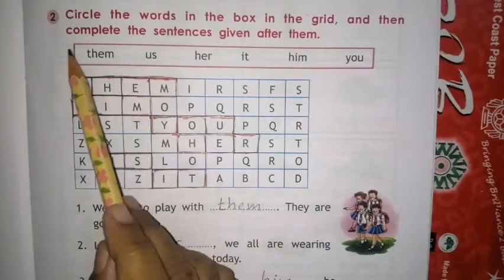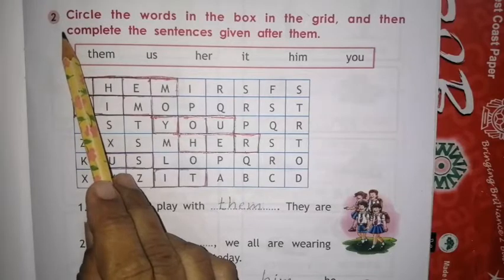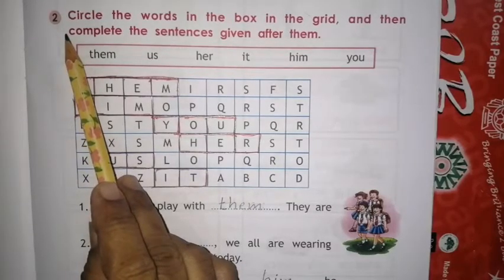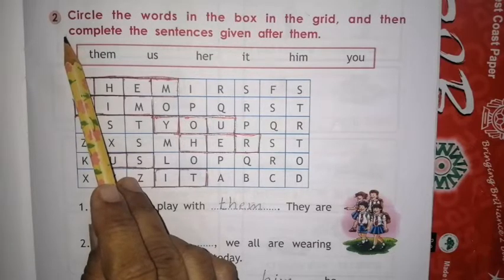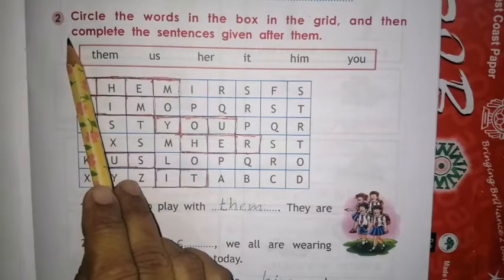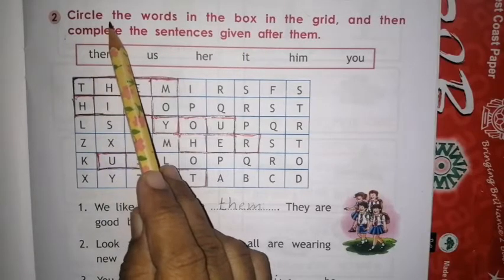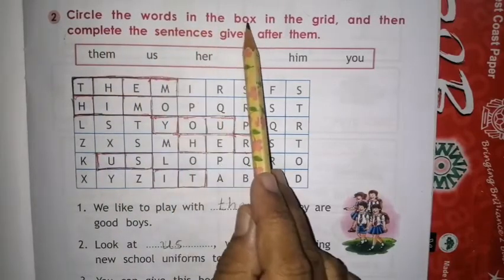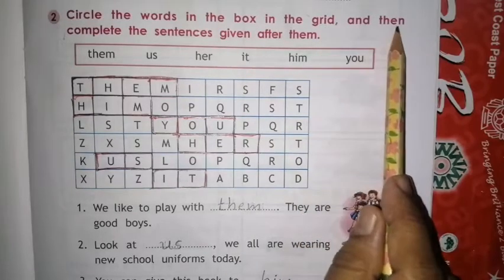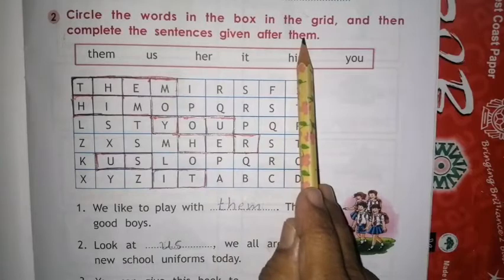Hello students. In this video, I will teach you exercise 2 of unit 12 — words used instead of nouns, means pronouns — on page number 29. Have a look here. Circle the words in the box in the grid and then complete the sentences given after them.